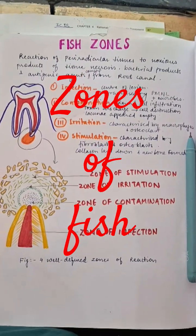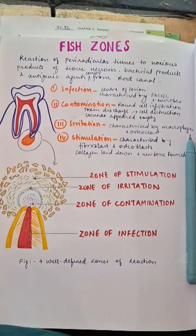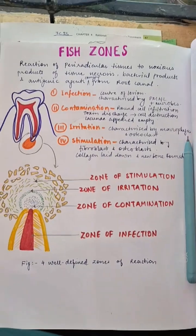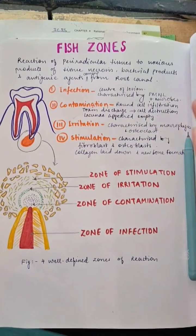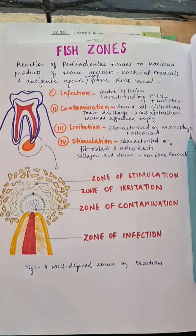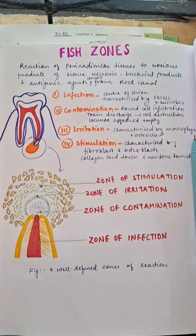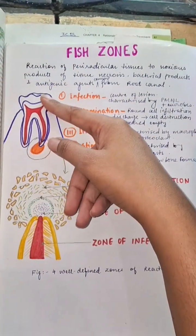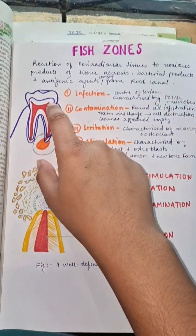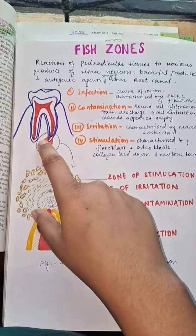Hello everyone, let's discuss the zones of Fish. The reaction of the periradicular tissues to various noxious products of tissue necrosis, bacterial products, or any antigenic agents coming from the root canal — for example, if there's caries and the noxious bacterial products are coming in and irritating, and the infection spreads.